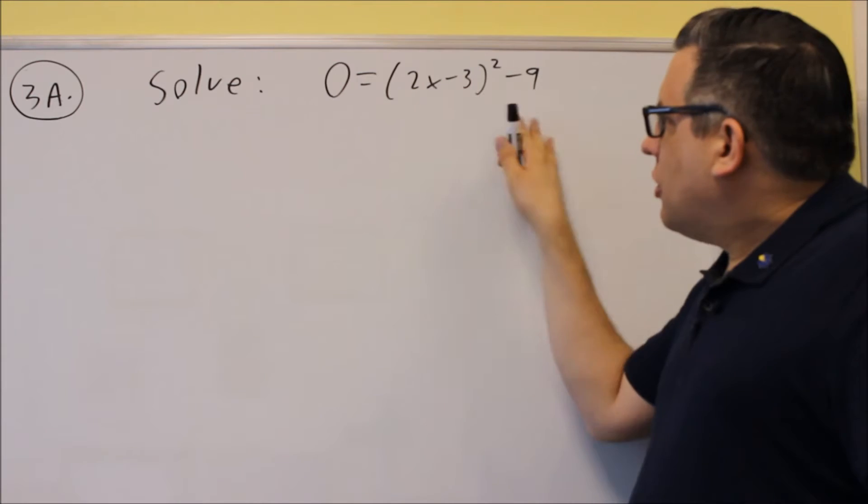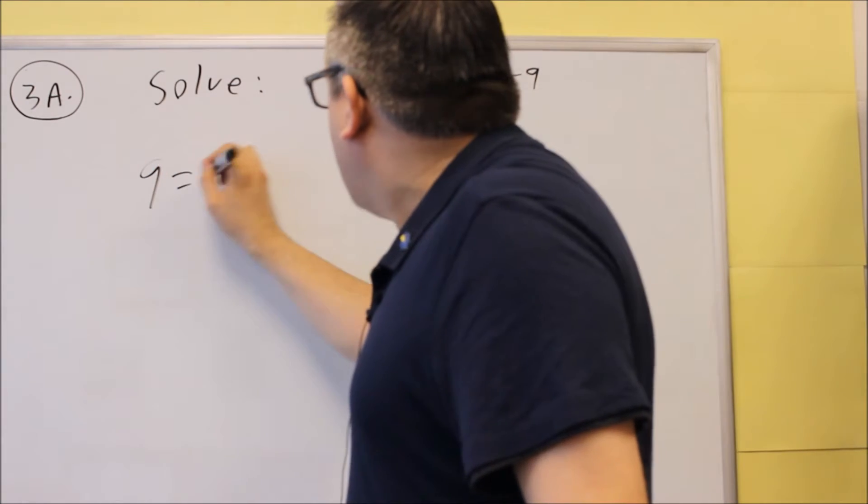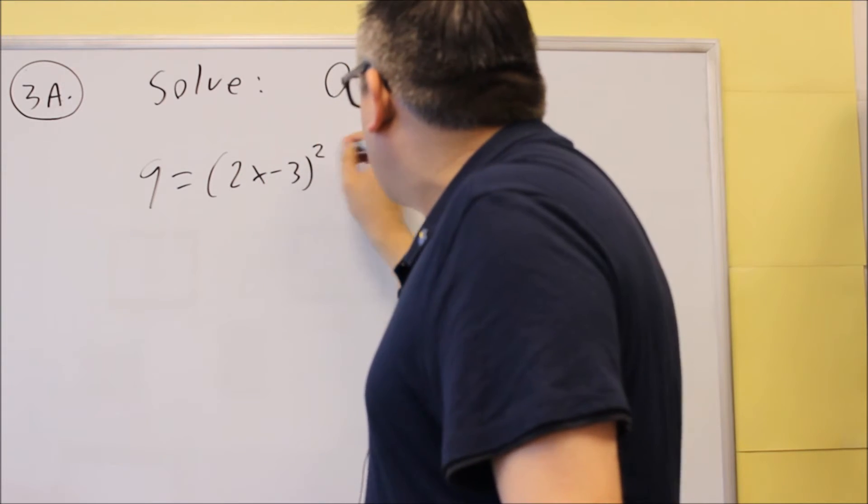The first thing we're going to do here is add 9 to both sides. So when we do that, we get 9 equals (2x - 3) squared.